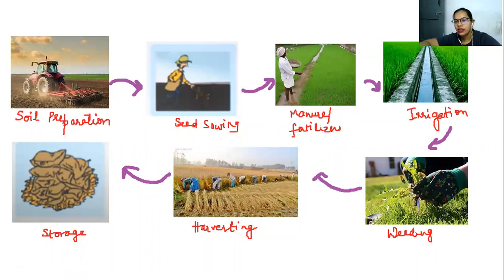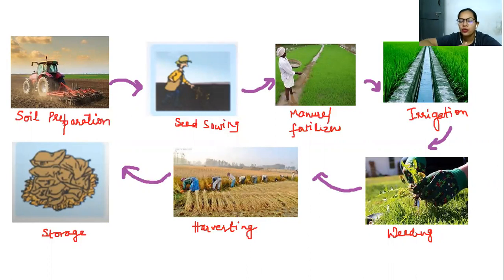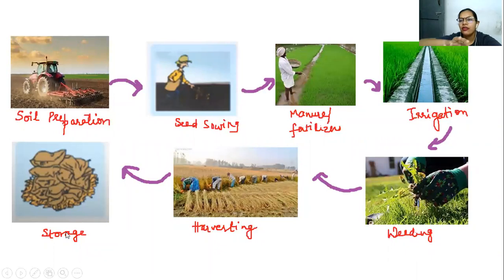Then comes weeding — you can see people removing weeds by hand. After that comes harvesting. There are some places like Punjab, UP, and Bihar where some farmers don't have much money, but those who can afford it use tractors for harvesting as well. And then the storage — you make 50 kg bags and sell them in the market.